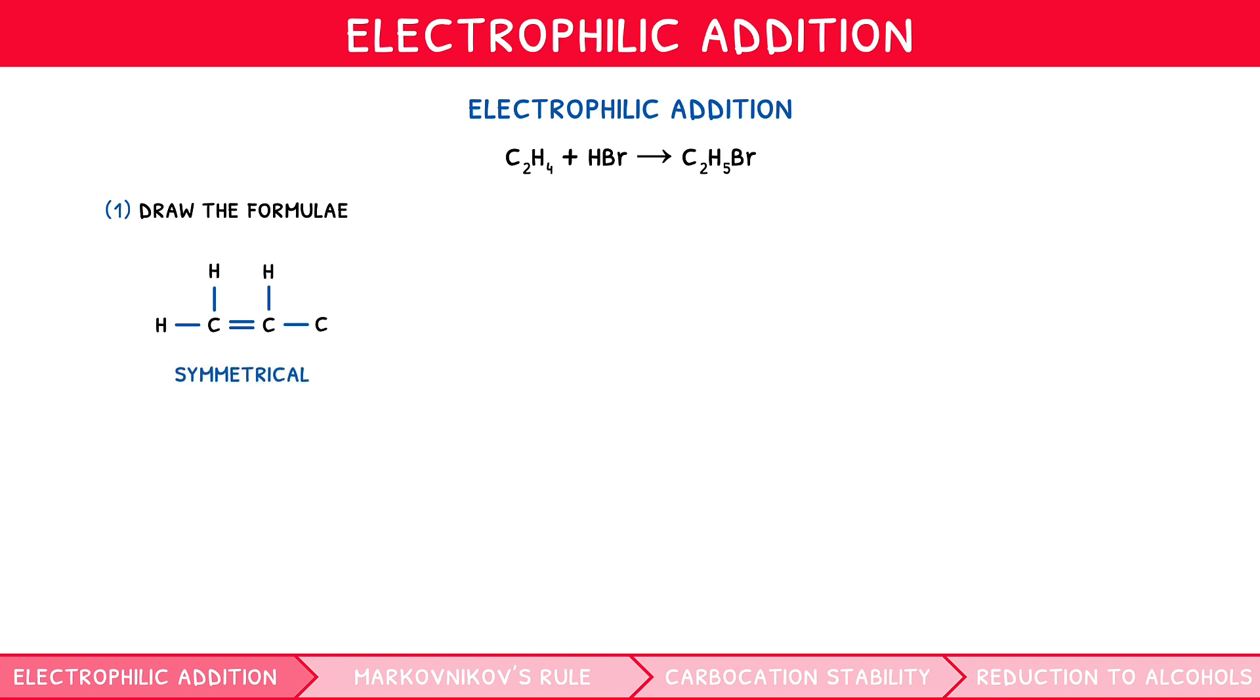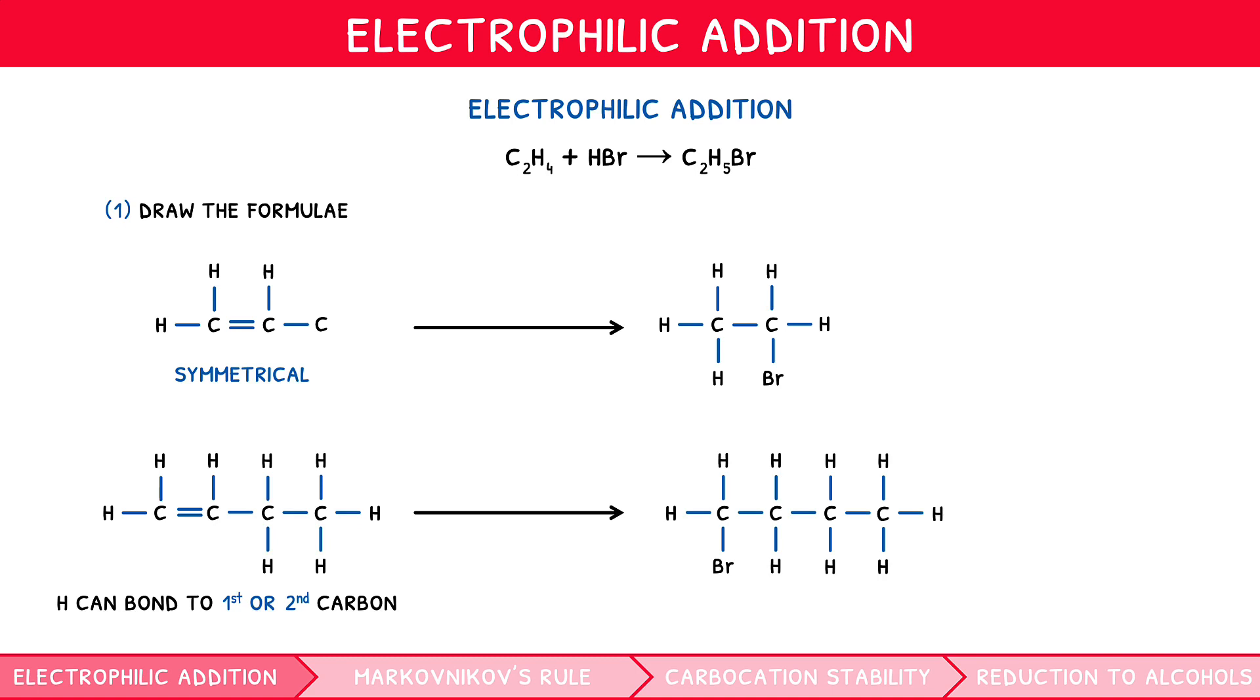You can see that the hydrogen could bond to either the first or second carbon, giving rise to two isomers respectively, 1-bromobutane and 2-bromobutane. However, one of these forms far more frequently than the other, predicted using Markovnikov's rule.